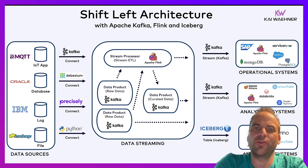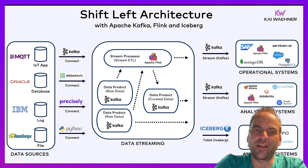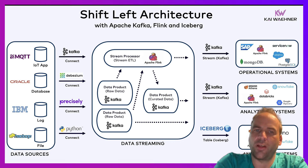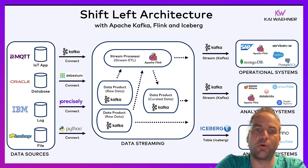No matter what you use — open source or any cloud service — the shift-left architecture brings all these benefits. You consume from all these data sources on the left side: transactional workloads, analytical workloads, high-volume log and clickstreams, or IoT sensor data. You can also use third-party tools for the connectivity there, or you directly stream the data into the streaming platform. In the streaming platform, in this example, your Kafka topics represent the data products. You should use a schema to define the data contract and the policies behind that. Then you can have raw data products and curated, processed products.